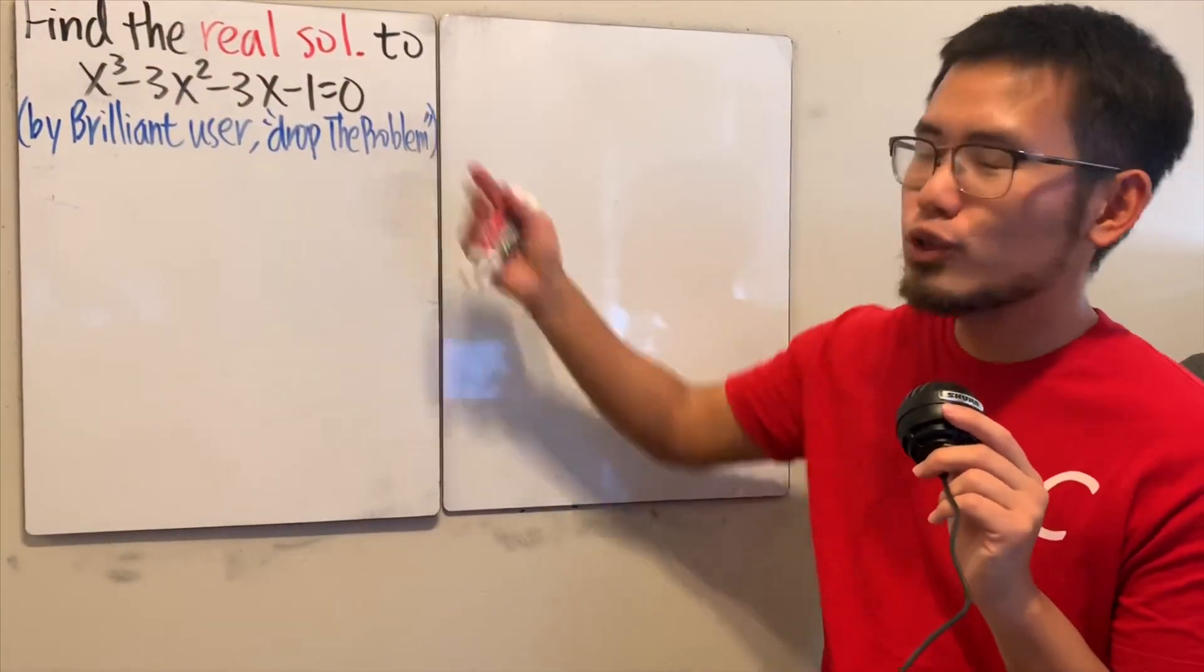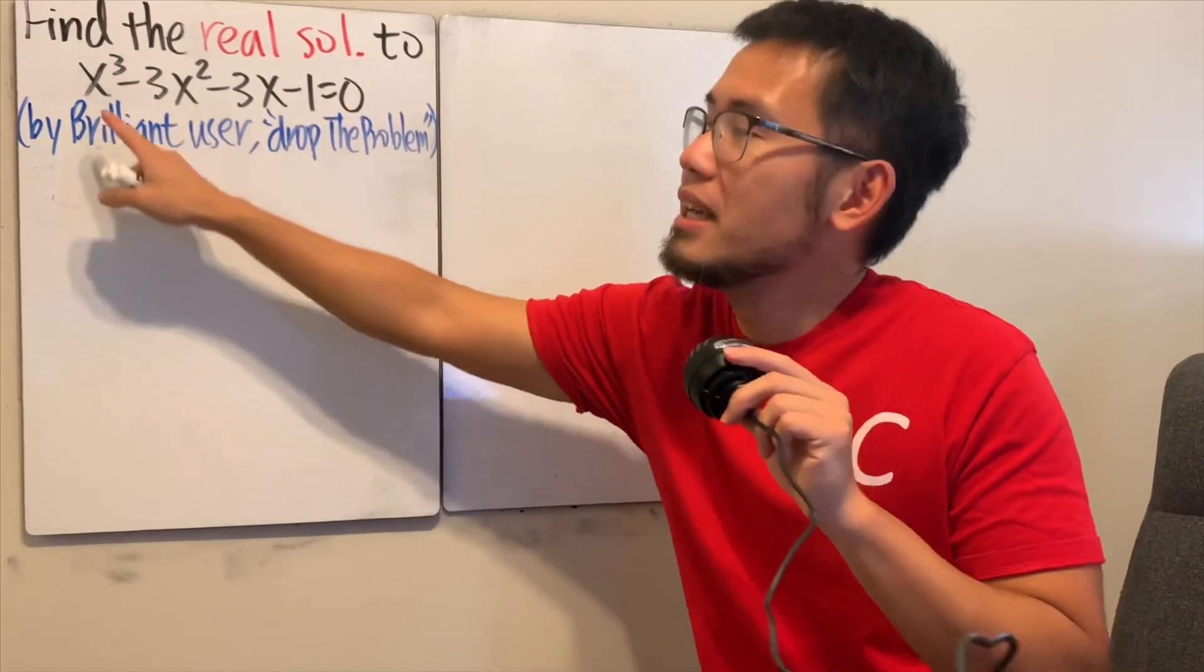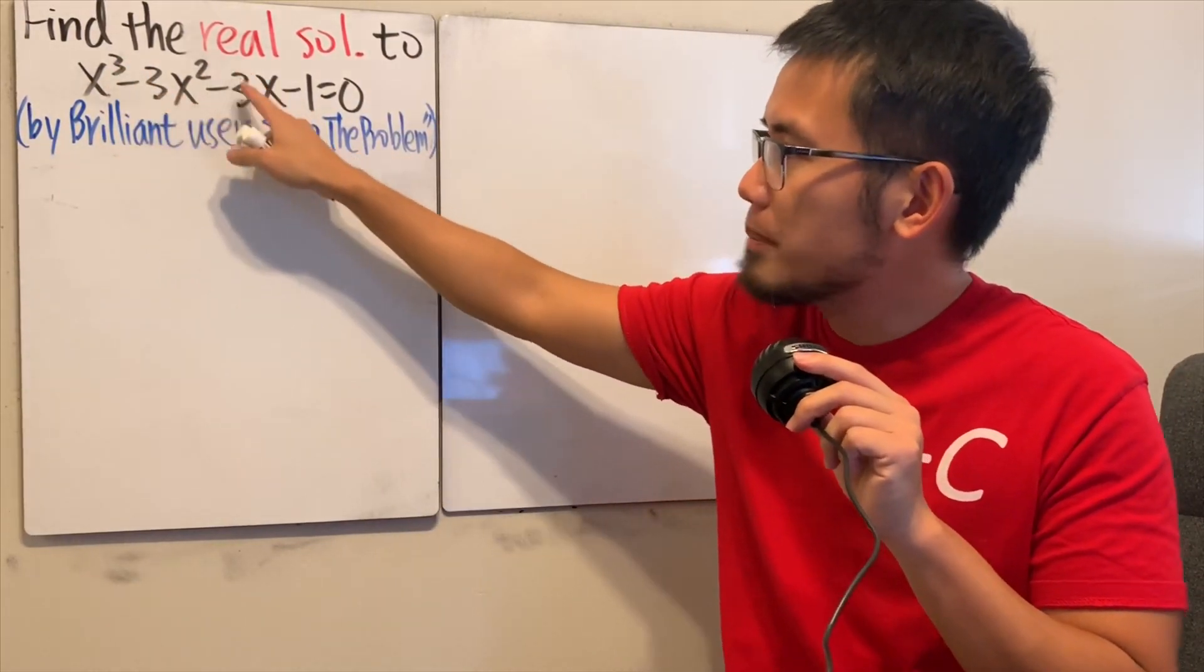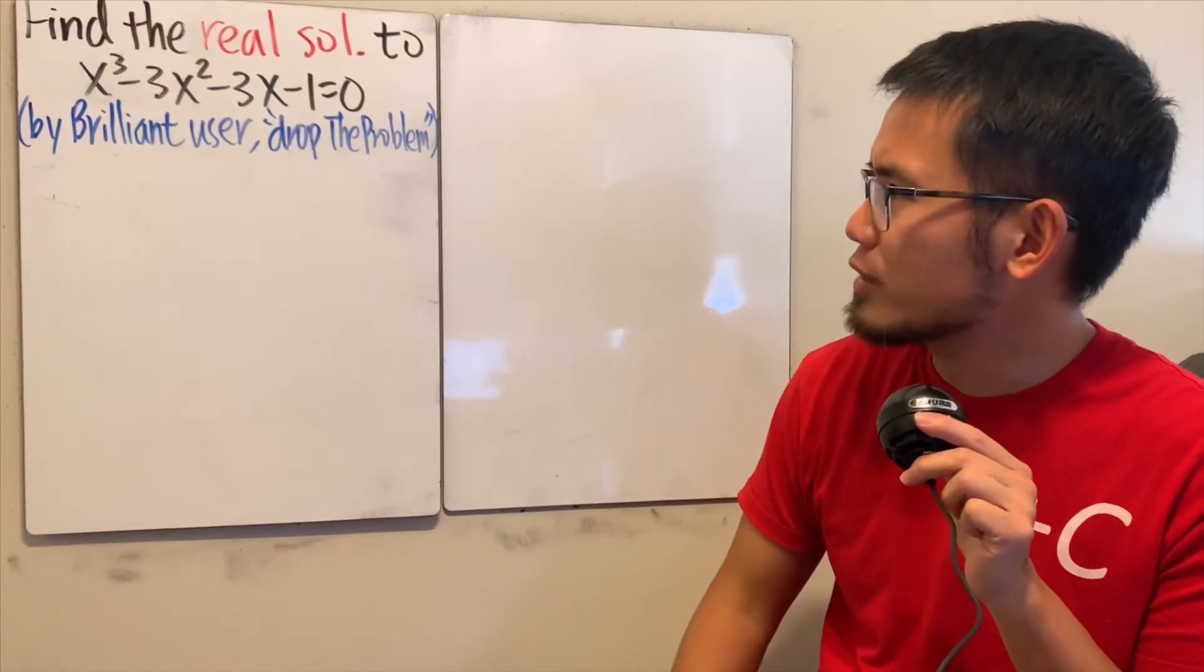Hello! Let's do some math for fun. This question is from Britt. We are going to find the real solution to the cubic equation x³ - 3x² - 3x - 1 = 0.